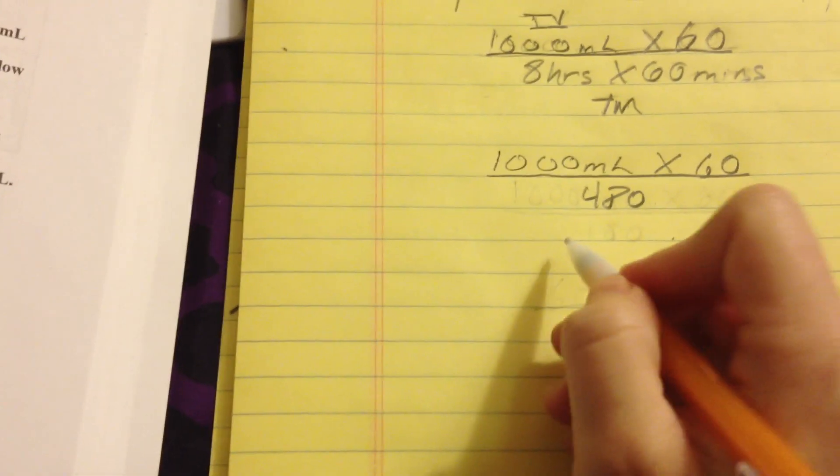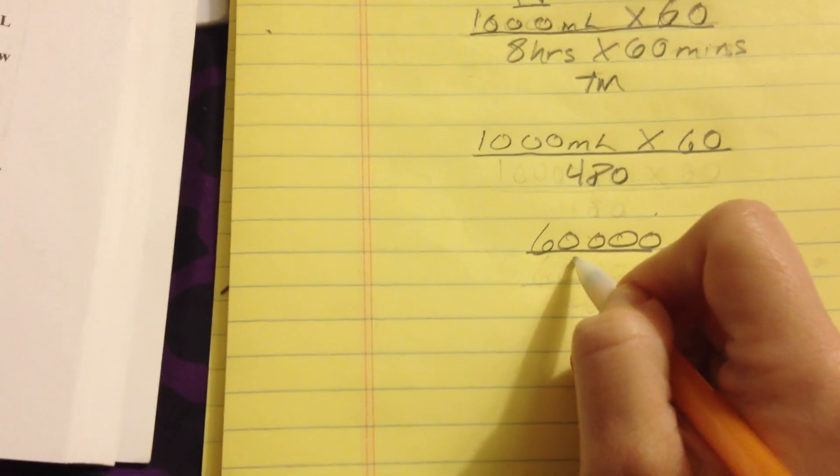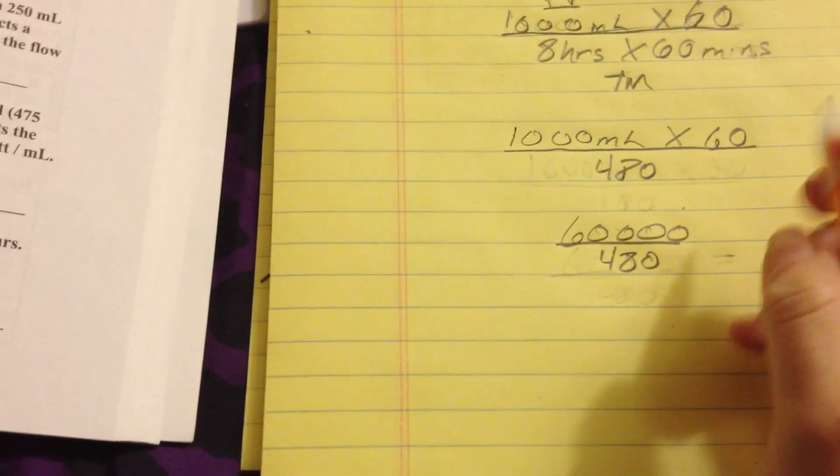So, 1,000 times 60 is 60,000. And we're going to set that over 480.